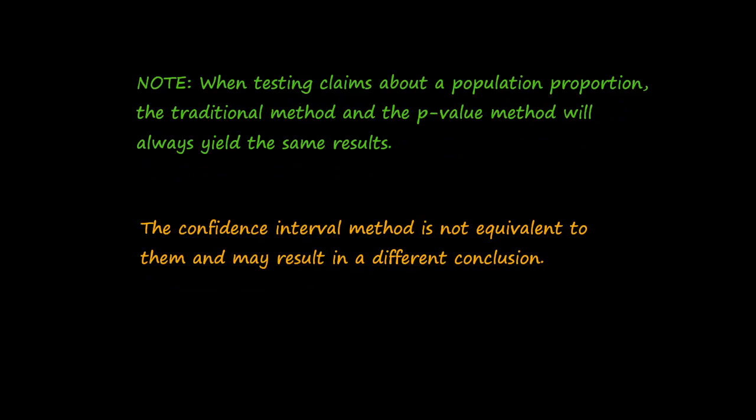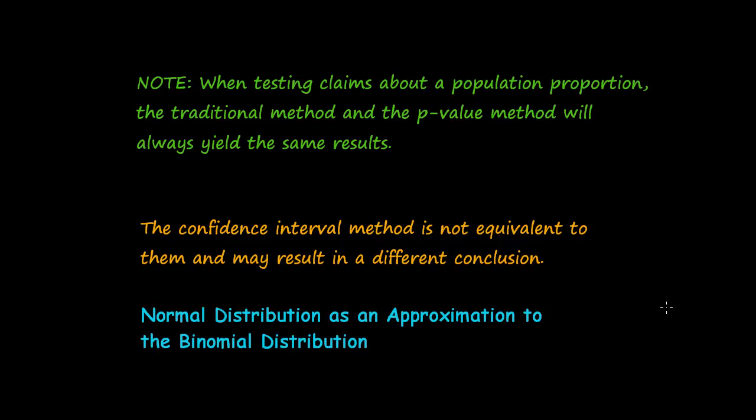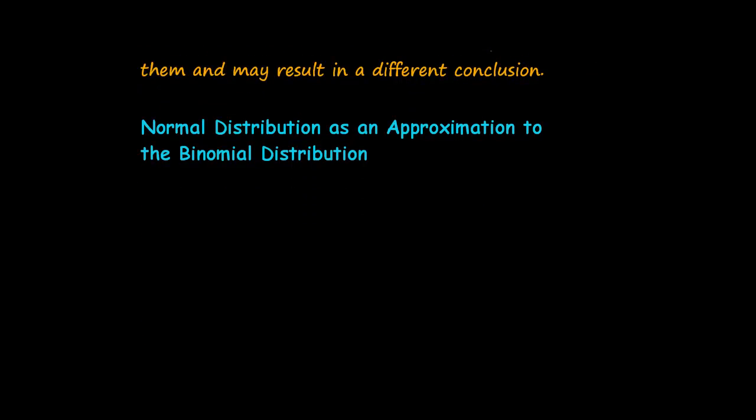Before we move on, we need to understand one more thing about testing a claim about a proportion. Under certain circumstances, such as those satisfying the three requirements above, a binomial distribution, which is what a proportion is, can be approximated by a normal distribution. So let's illustrate this with an example.